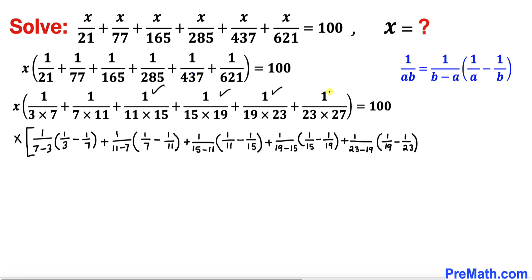Continuing, we take care of the final fraction similarly, ending with a term involving 1/23 minus 1/27, and close the bracket. The right-hand side remains 100.